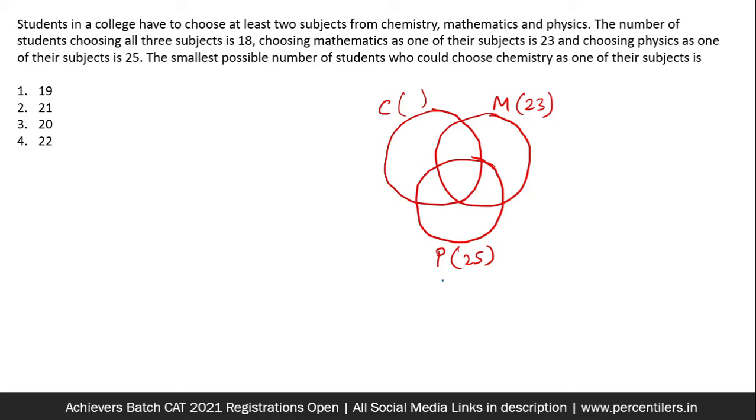Alright, so here is the diagram. So as the question says that every student is supposed to choose at least two subjects, which means that this region should be marked zero at all the places. People who have absolutely no idea of the basics of Venn diagrams may want to skip this question because I cannot explain the most basic things over here for you. This is only a solution video.